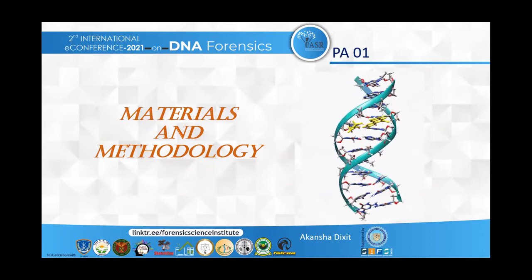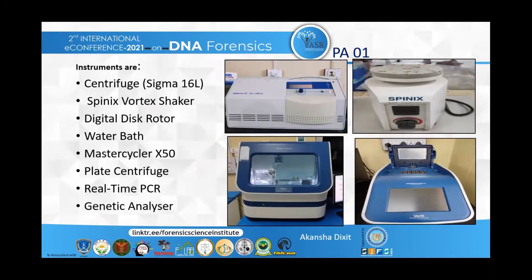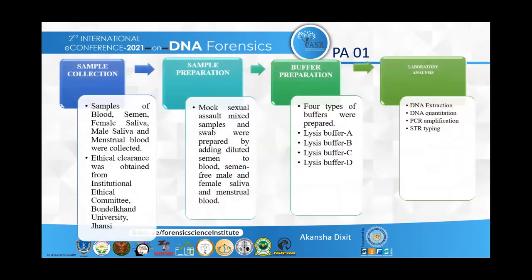To meet the identified objectives of the study, the following materials and chemical reagents were used. For methodology and sample collection: approximately 16 mock samples of blood, semen, male saliva, female saliva, and menstrual blood were collected randomly from the region of Sagar, located in Madhya Pradesh, India. Samples were simulated in the lab at dilution factors of 1:50 and 1:500. 16 mock samples and 16 swabs were isolated with four different lysis buffers at different concentrations.